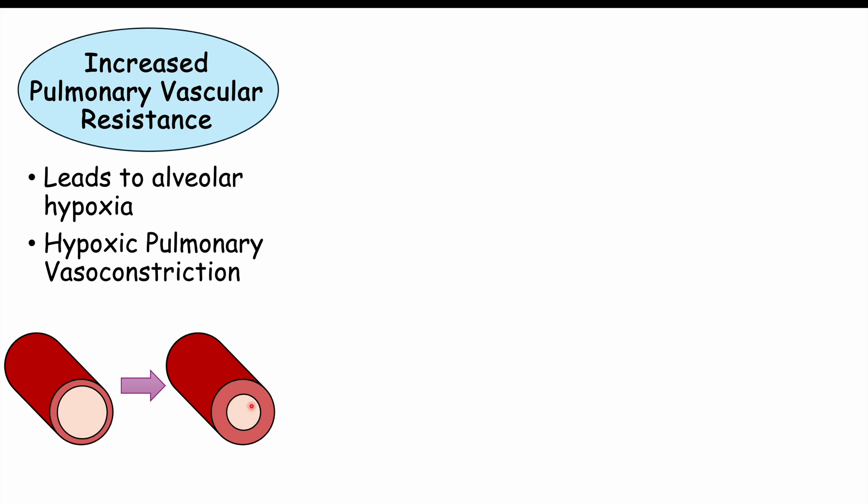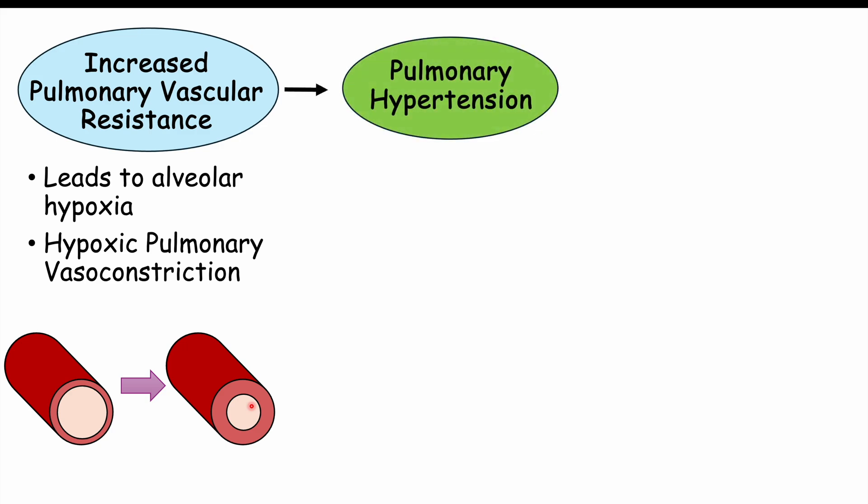The lungs vasoconstrict their own blood supply to direct blood into areas where they sense more oxygen coming in — maximizing oxygen absorption. If there's less oxygen reaching the alveoli — the little air sacs in the lungs where oxygen crosses into the blood and is taken up by hemoglobin — the lungs will vasoconstrict to redirect flow. This leads to increased pulmonary vascular resistance.